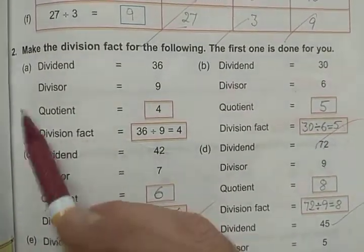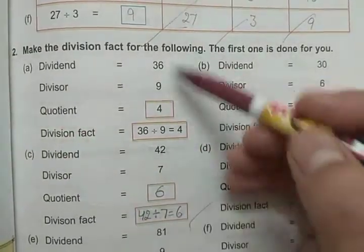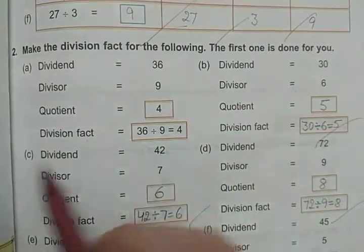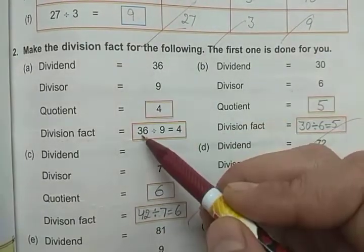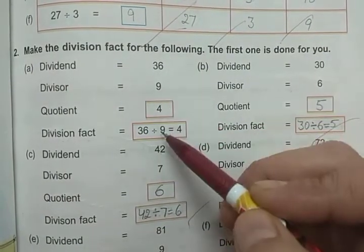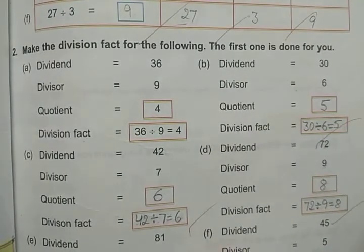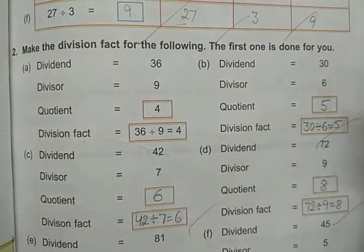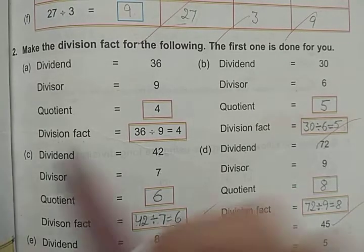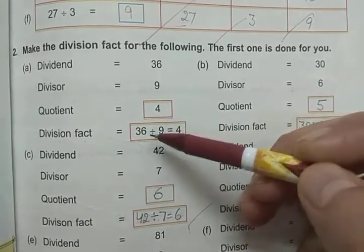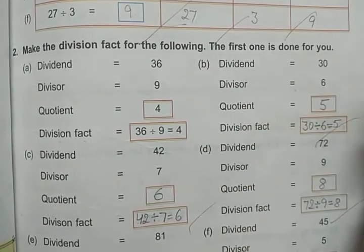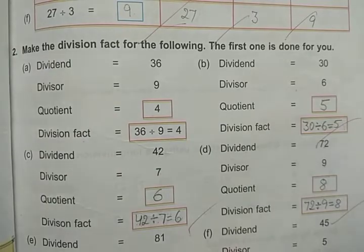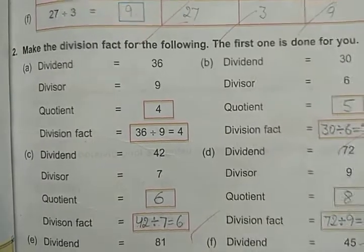We also have questions on these terms. It is very easy. If you are given the dividend and divisor, then you can find out the quotient and also write the division fact. In the division fact, you write dividend divided by divisor equals the quotient. So if the dividend and divisor are given, you can easily find out the quotient and write the division fact.